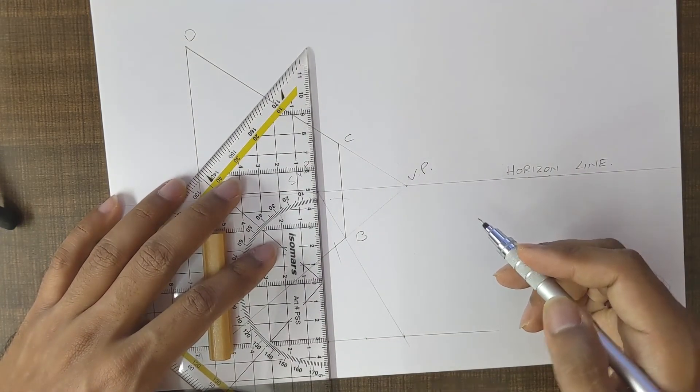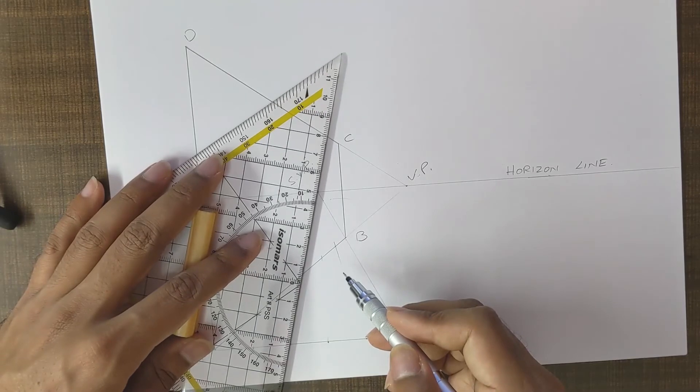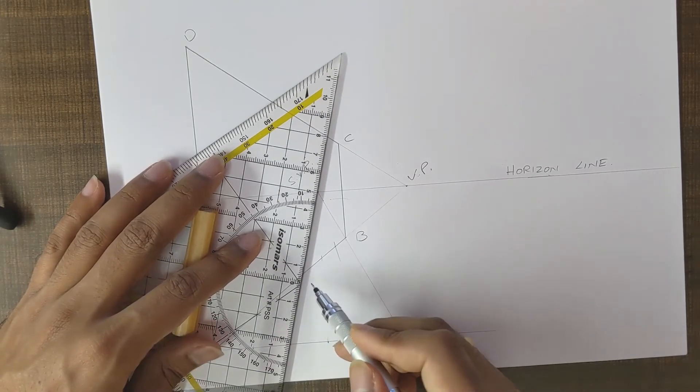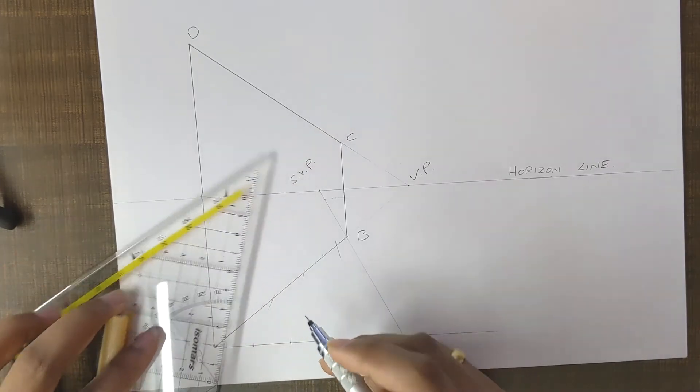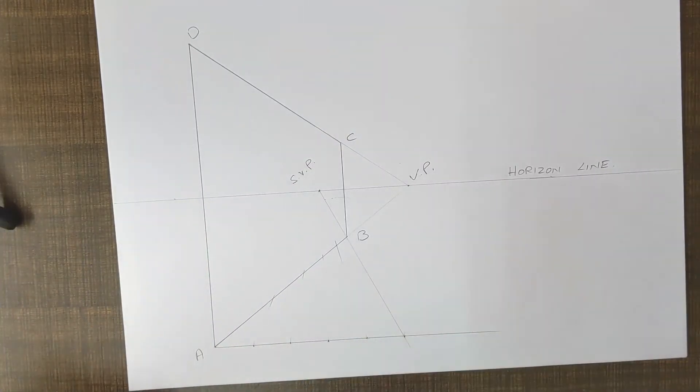These are nothing but the equal segments in perspective. So we have these intersection points over here.